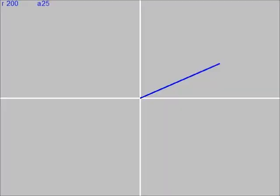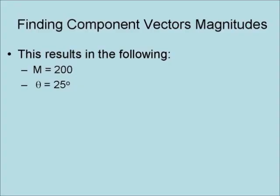This is a vector with a magnitude of 200 and an angle of 25 degrees. Finding the component vector magnitudes of this vector results in m equals 200 and theta equals 25 degrees, such that x equals 200 times the cosine of 25 degrees, which equals 181.26.